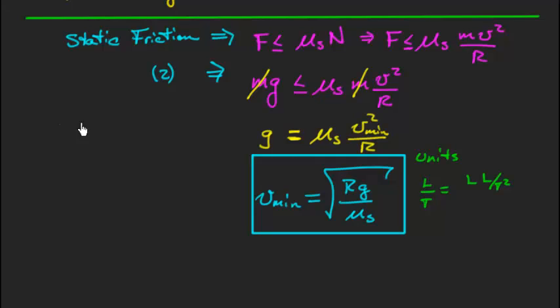Well, remember, f is related to n through mu s. My force, the friction force, is related to the normal force through this relationship mu s. So, if on the left-hand side I have a force, on the right-hand side I need a force to match it, n is already a force, so therefore mu s must be unitless. It doesn't have any units at all. And, of course, we can't forget the square root sign.